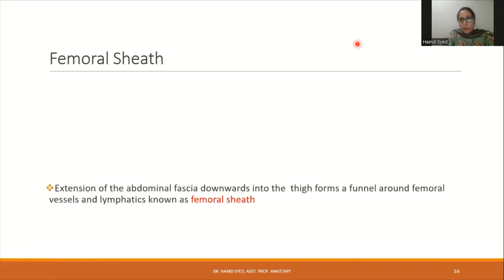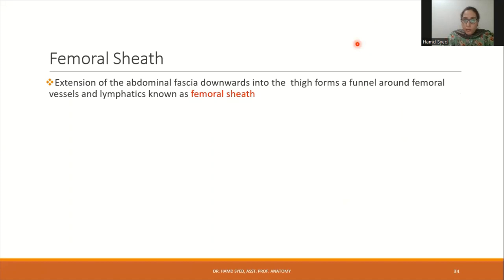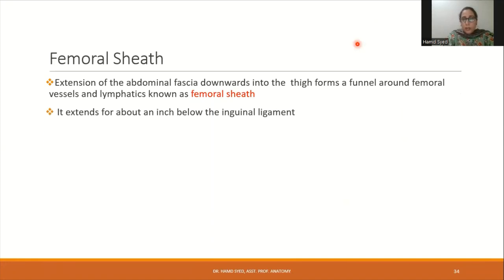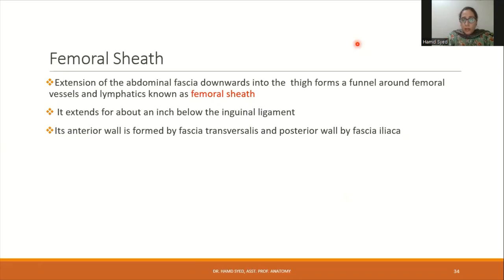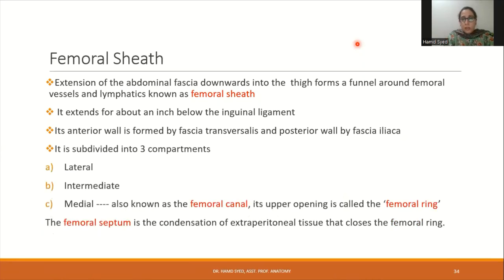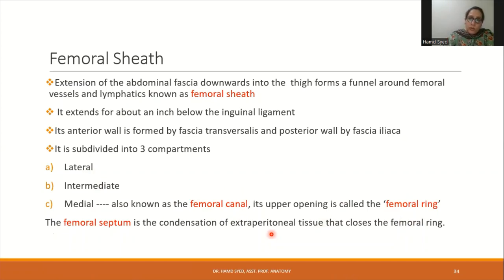The femoral sheath is an extension of abdominal fascia downwards into the thigh, forming a funnel around the femoral vessels and lymphatics. It extends about one inch below the inguinal ligament. Its anterior wall is formed by fascia transversalis and its posterior wall by fascia iliaca. The femoral sheath is further subdivided into three compartments — lateral, intermediate, and medial. The medialmost compartment is called the femoral canal, and its upper opening is called the femoral ring. The femoral septum is the condensation of extraperitoneal tissue that closes the femoral ring.